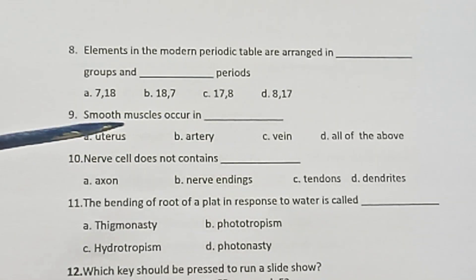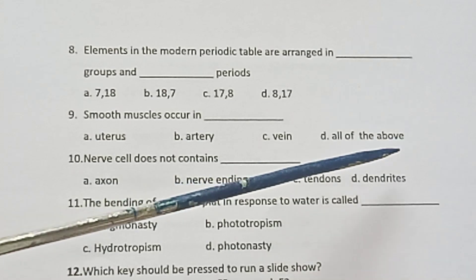Question 9: Smooth muscles occur in: uterus, artery, vein, or all of the above.